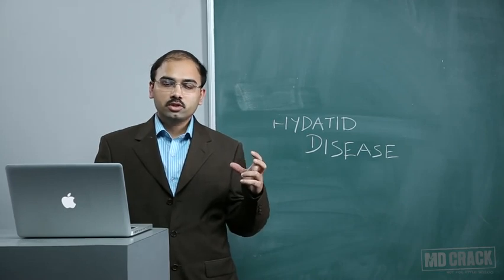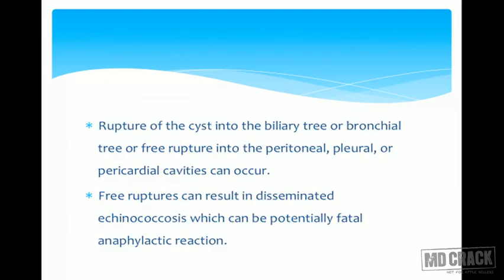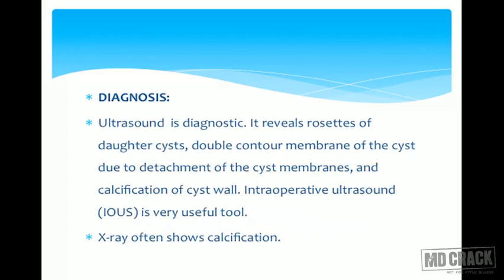Complications of hydatid cyst of the liver include anaphylaxis after rupture, obstructive jaundice if the cyst compresses biliary radicals (requiring ERCP with sphincterotomy), infection presenting as empyema or liver abscess, calcification, and liver failure if both lobes are involved. Rupture can occur into the biliary tree, bronchial tree, or free rupture into the peritoneal, pleural, or pericardial cavities. Free rupture can result in disseminated echinococcosis, which can be potentially fatal due to anaphylaxis.